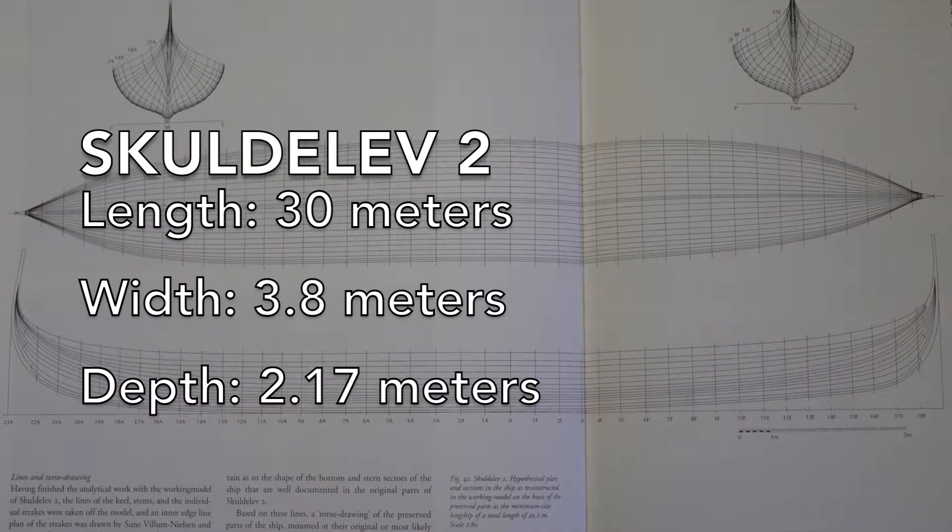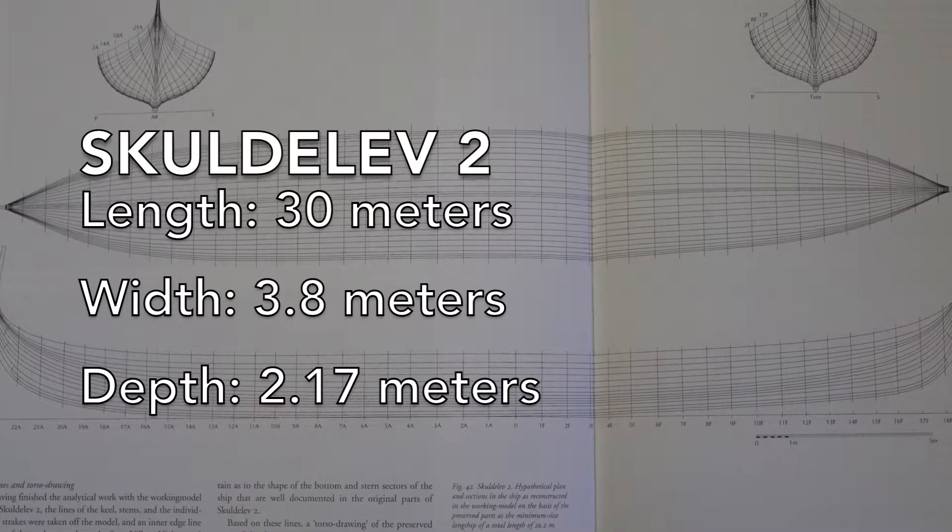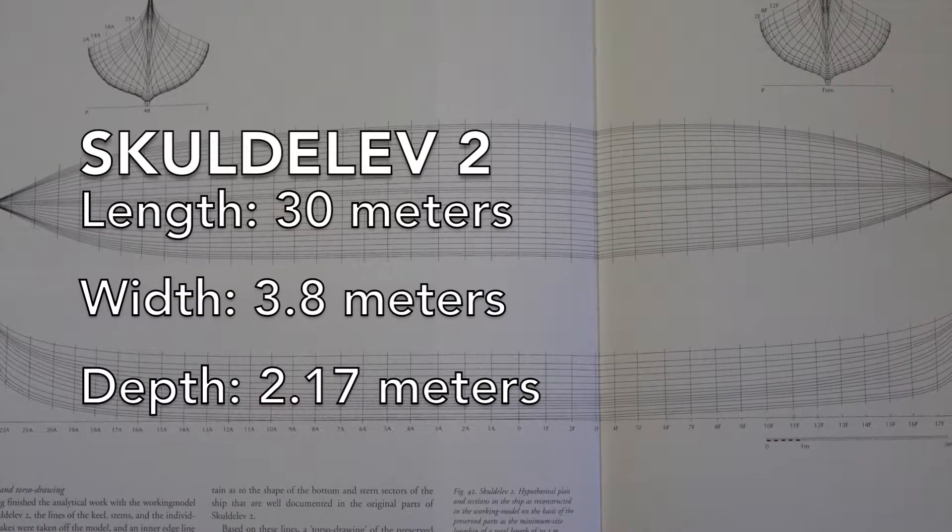Skuldelev II had a length of 30 meters, width of 3.8 meters, and depth of 2.17 meters, and more of a V-shaped hull.